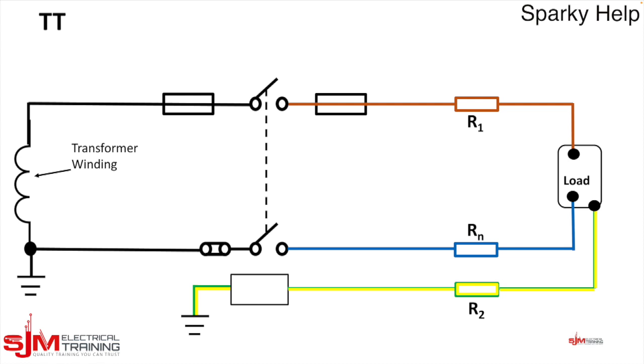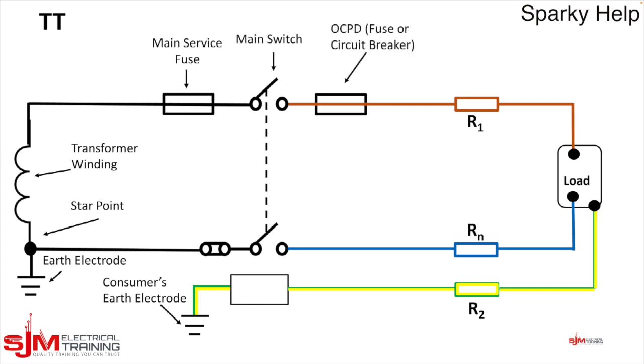Let's go round then. We have the transformer winding, we have the star point within the transformer, we have the consumer's earth electrode, which is put in by ourselves if we're electricians, we have the earth electrode on the transformer itself, we have the main service fuse, we have the main switch in this case double pole, we have the overcurrent protective device fuse or circuit breaker, the exposed conductive part.